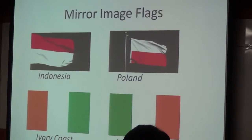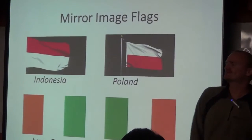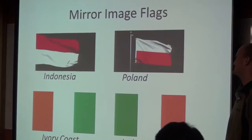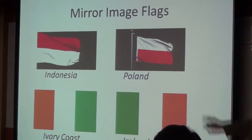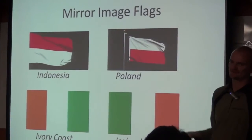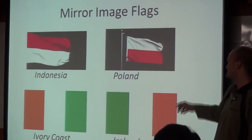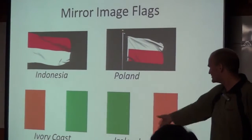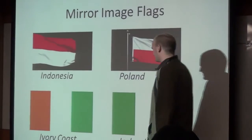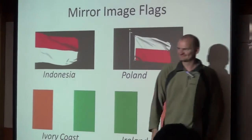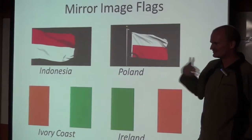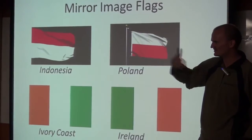It gets worse. Some countries have a mirror image of each other. Like, come on, you guys. Indonesia and Poland — oops, upside down. Ivory Coast and Ireland — there's a mirror. So if the flagpole's here, technically it's both countries, right? Depending which way the wind blows.